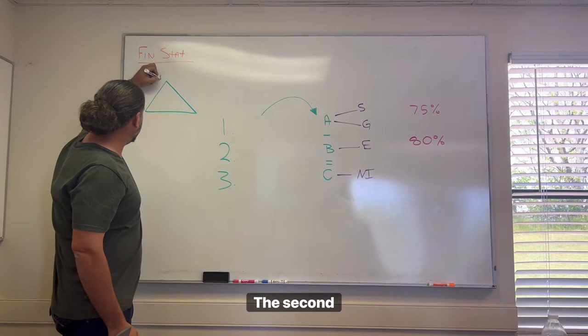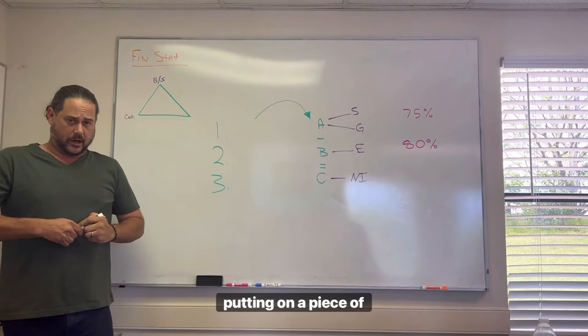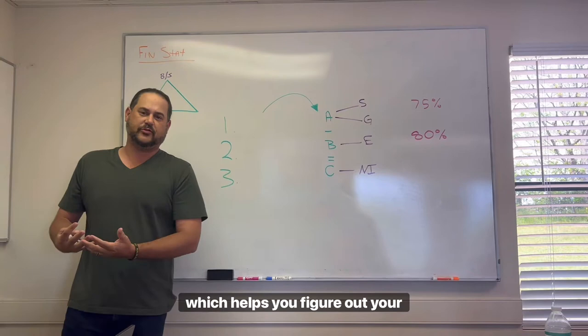The second is a balance sheet. A balance sheet is simply putting on a piece of paper what you own versus what you owe, which helps you figure out your net worth.